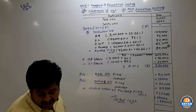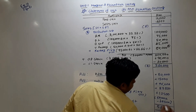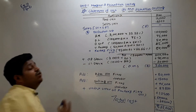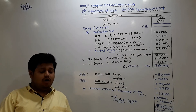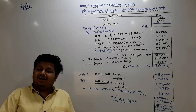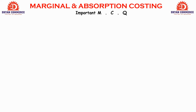Both statements — marginal and absorption — are now prepared. With this, the chapter's main problems are done. Today we also go into MCQ revision for Marginal and Absorption Costing. Let's look at the important MCQs from this chapter. MCQ No. 1 is from Marginal and Absorption Costing.